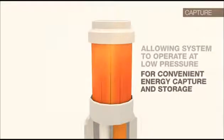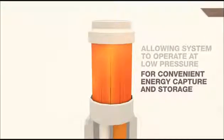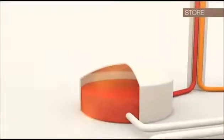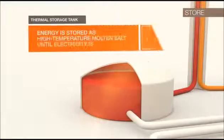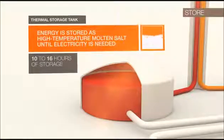After passing through the receiver, the molten salt then flows down the piping inside the tower and then to a thermal storage tank where the energy is stored as high temperature molten salt until electricity is needed.